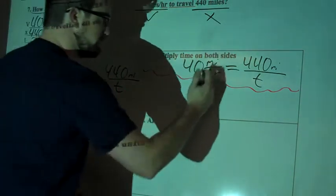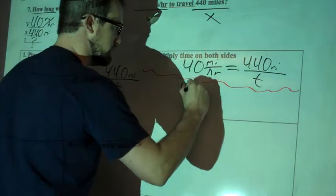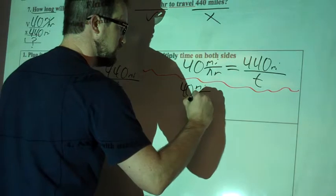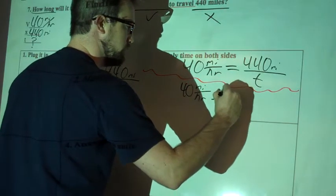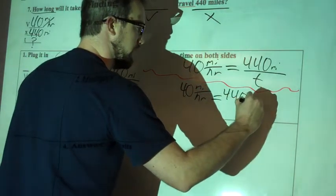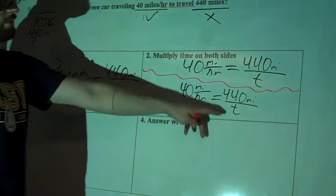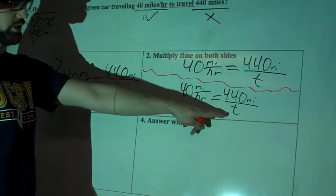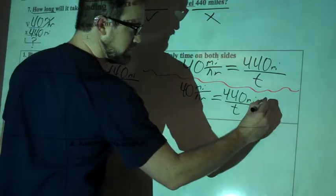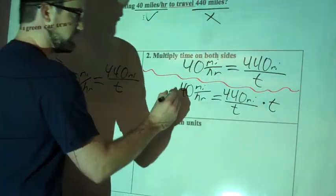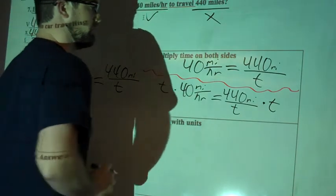So if we're multiplying by time on both sides, I'm going to draw a little red squiggly here to separate that out. So I'll have 40 miles per hour still here, and that's going to equal 440 miles still divided by time. And because I want to get time up to the numerator instead of where it's on the denominator, I'm going to multiply by T on both sides.